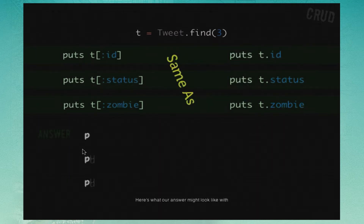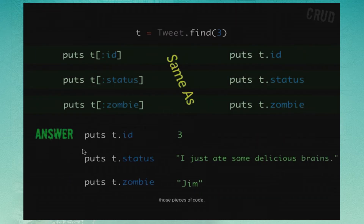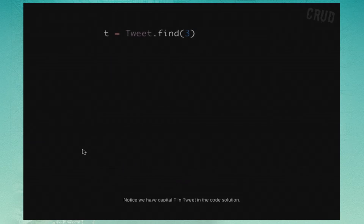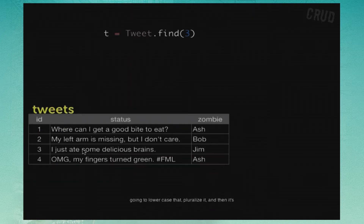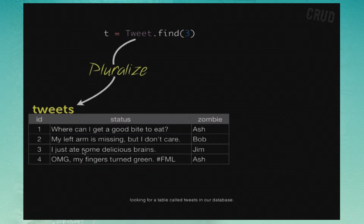Here's what our answer might look like with those pieces of code. There's one Rails convention I want you to notice: we have a capital T in Tweet in the code solution. What's happening on the back end is that Rails lowercases that, pluralizes it, and then looks for a table called 'tweets' in our database.